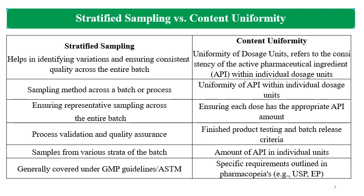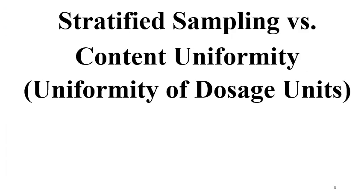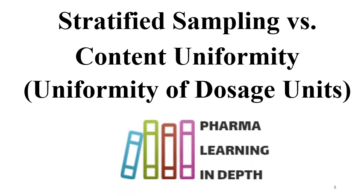Stratified Sampling is done as per ASTM guidelines, US FDA guidelines, regulatory guidelines, and GMP guidelines; results are evaluated accordingly. Content Uniformity requirements are specific and are outlined in pharmacopoeias like USP, EP, and other pharmacopoeias. The aim of both these testing approaches is to ensure that API is distributed uniformly throughout the batch and throughout the individual units.